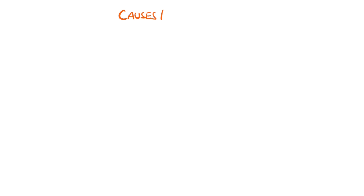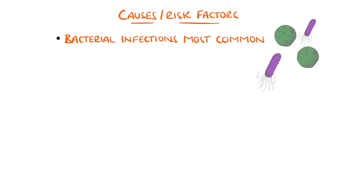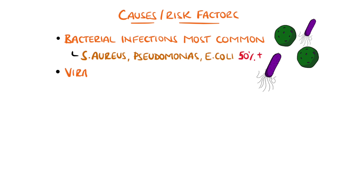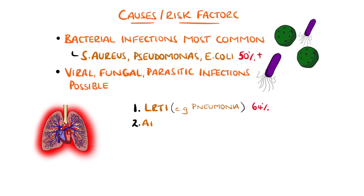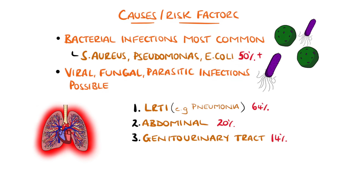In most cases, a bacterial infection is the source, with Staphylococcus aureus, Pseudomonas, and E. coli being isolated in over 50% of cases. But it can be due to viruses, fungi, and parasites as well. Lower respiratory tract infections, like pneumonia, are the most common primary source of infection, followed by the abdomen and urinary tract, but can be from any source. In the elderly, the urinary tract is the most common source.